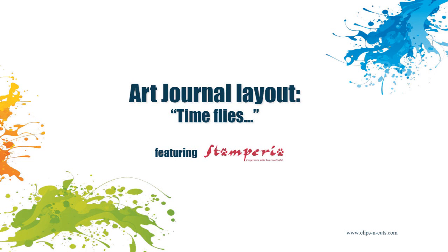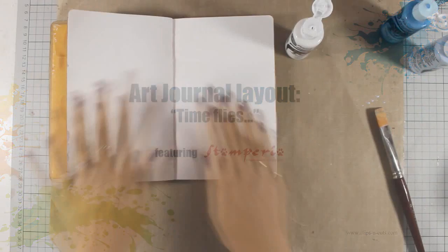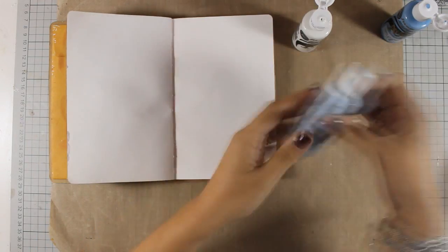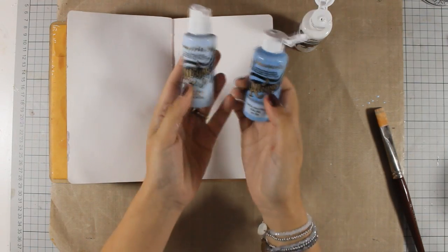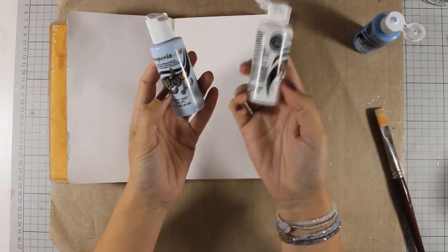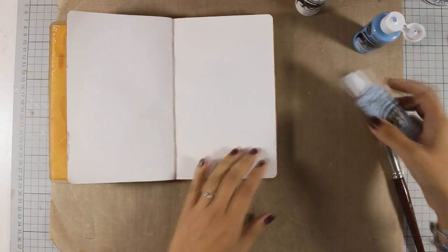Hi everyone, it's Vicky here and welcome to another art journal layout featuring Stamperia products. For my background today I will be using two shades of blue and these are acrylic paints. I am going to add also a little bit of white at the end.